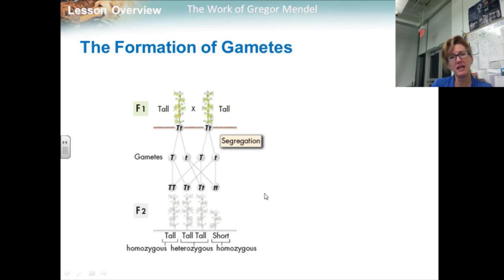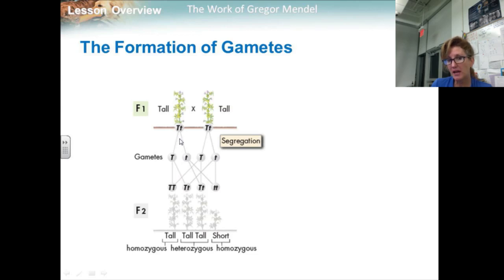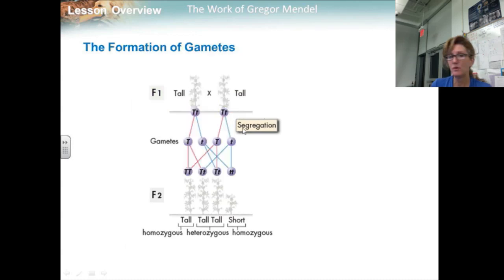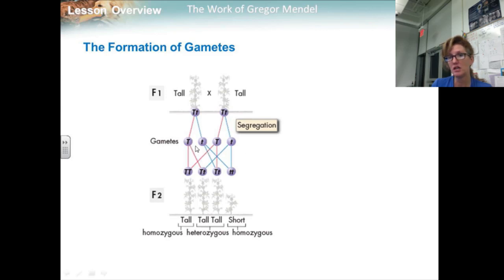Each F1 plant, all of which were tall, had inherited an allele for tallness from a tall parent and an allele for shortness from the short parent — one T allele and one short allele. When each F1 adult produced gametes, the alleles for each gene segregated from one another so that each gamete carried only one allele for each gene.